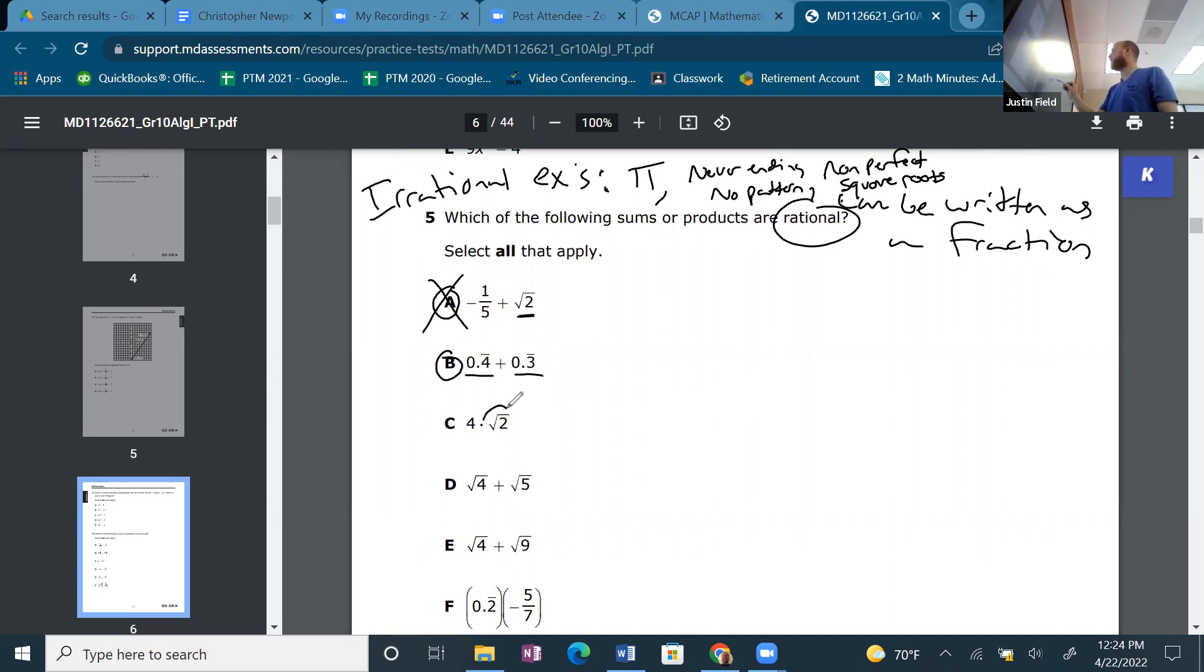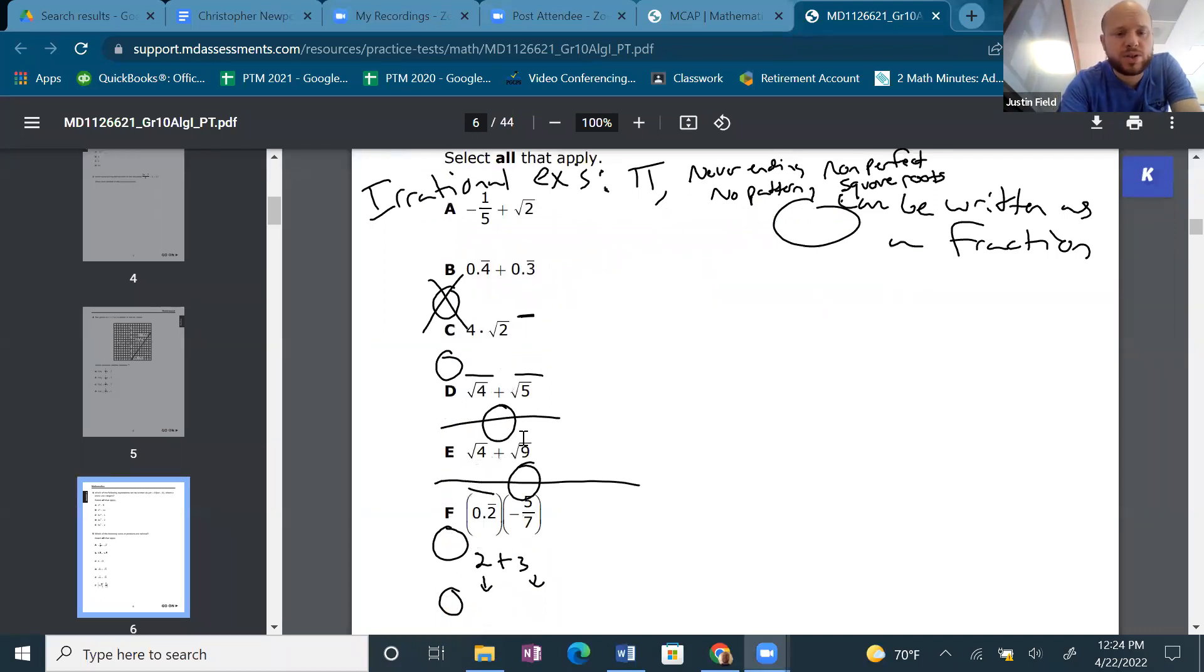This is a non-perfect square root. 5 is a non-perfect square root, even though 4 is perfect, 5 is not, so you don't count. But E, 4 and 9 are both perfect, so that's just 2 + 3, obviously rational. F is a rational number times a rational number, so it's rational. Set of rational numbers is closed under multiplication.